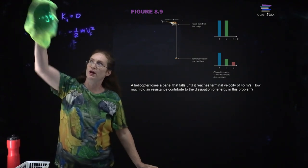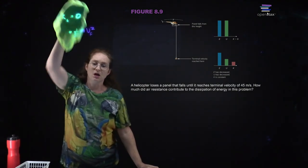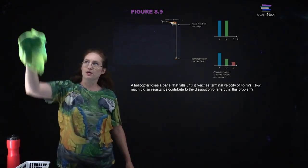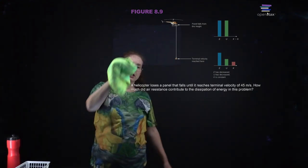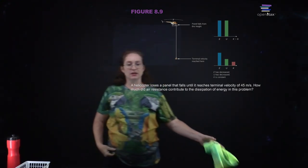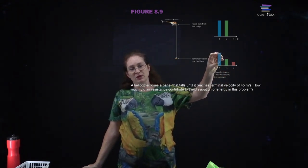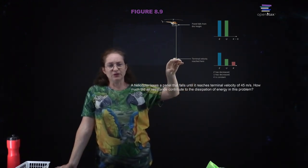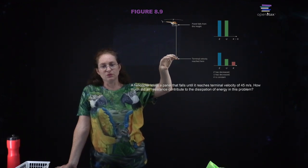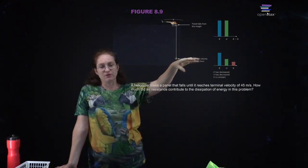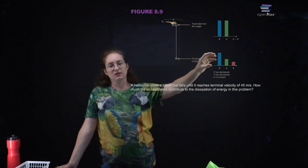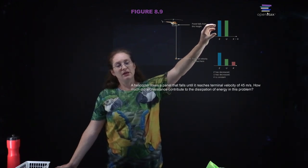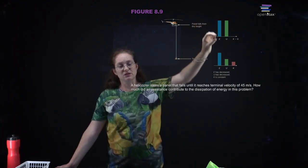Here you have a helicopter panel that falls. As it falls, the panel loses energy due to air resistance and ends up with less energy. When it reaches its terminal velocity, it has some final height. The total amount of energy is less than what you started with — the amount of energy lost due to air resistance is the difference.